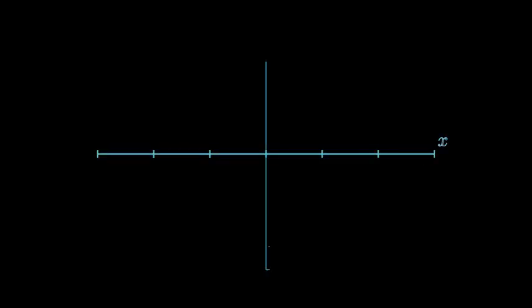Now look at its graph. Its graph is an upward parabola, and this looks like y = x², and this is y = -x².